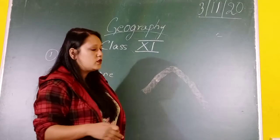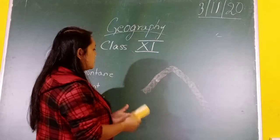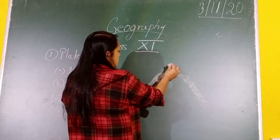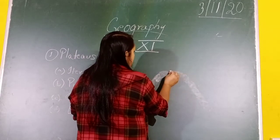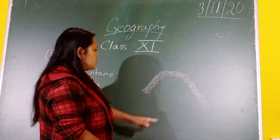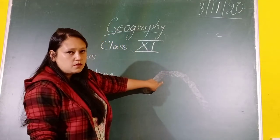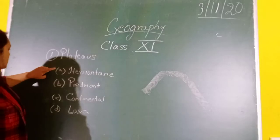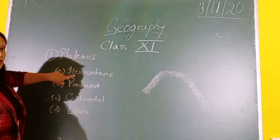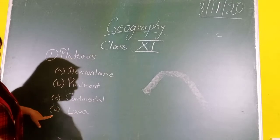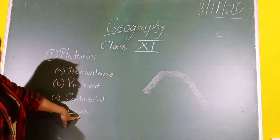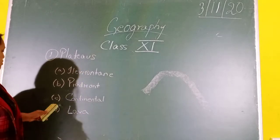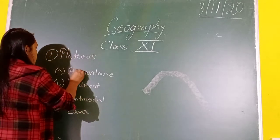Because of denudation and weathering, the upper layer of the mountain — the topmost layer — may be eroded, and then it may have a flat top. So sometimes this is also how a plateau is formed. Plateaus are given in your book as three types, but there is also an explanation for lava plateaus. So we are going to divide the classification into four parts.